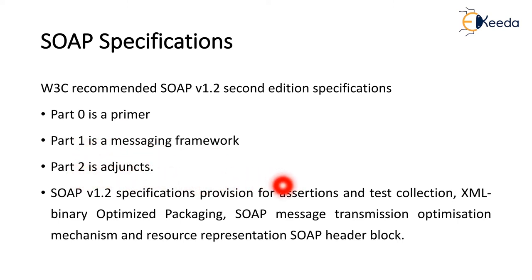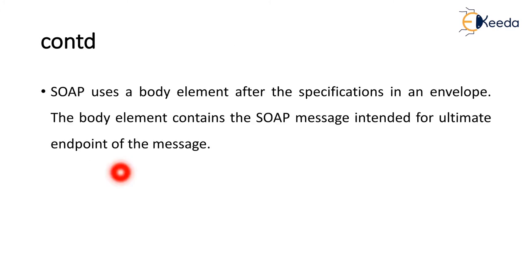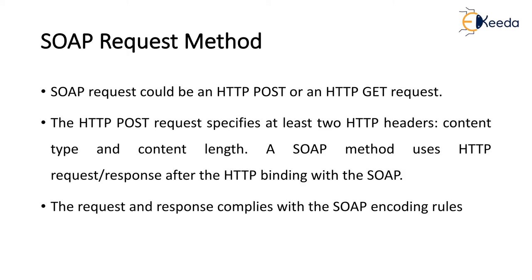SOAP version 2 specifications provide for assertions and test collections, XML binary optimized packaging, SOAP message transmission optimization, and the resource representation SOAP header block. SOAP uses the body element after the specifications in an envelope. The body element contains the SOAP message intended for the ultimate endpoint of the message. The envelope contains the body element, which is mandatory; the header is optional but the body element is mandatory. Web communications use SOAP through request and obtaining the SOAP response — it is a request-response method.